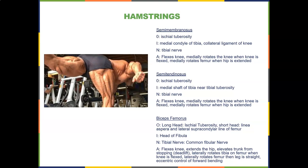The semitendinosus originates on the ischial tuberosity, inserts on the medial shaft of the tibia near the tibial tuberosity, is innervated by the tibial nerve, and flexes the knee, medially rotates the knee when the knee is flexed, and medially rotates the femur when the hip is extended.